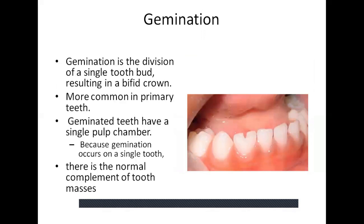Germination is the division of a single tooth bud resulting in a bifid crown. It is more common in primary teeth. Germinated teeth have a single pulp canal. Because germination occurs on a single tooth, there is a normal complement of tooth numbers.